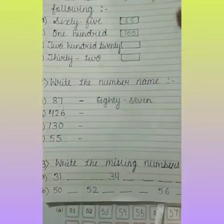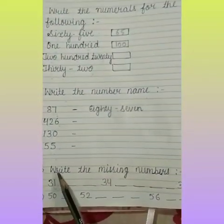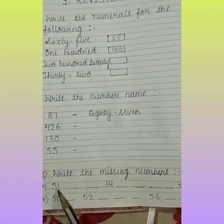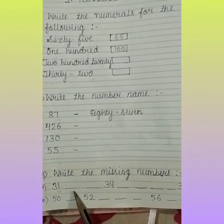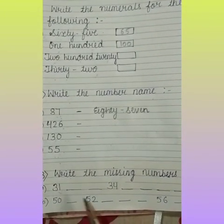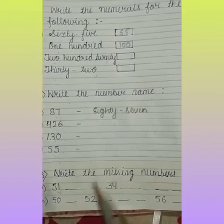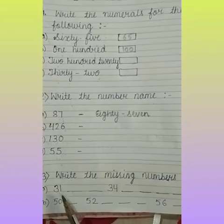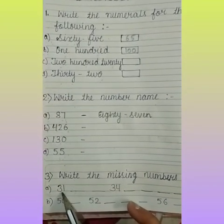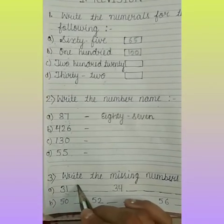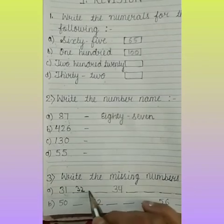Next question is: write the missing number. Write the missing number — means you have to fill the gap. Number A is 31 dash. So what is the next number? You have to start counting from 31. What comes after 31? 32.